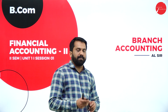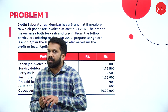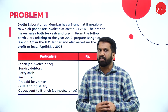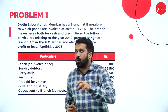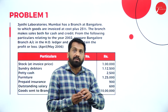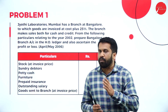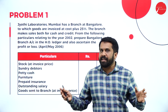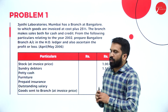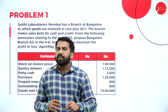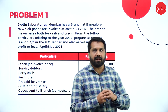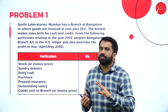Before we go to the problem, let's understand branch accounting. Why do we prepare branch accounting? For example, if there is a head office with two or three branches, each individual branch has its own accounting transactions. Once they are done with individual branch accounting, they send it to the head office. The head office then takes all transactions from individual branches, merges them, and makes a final statement. Here, we are taking only one individual branch.